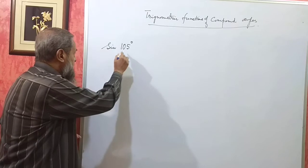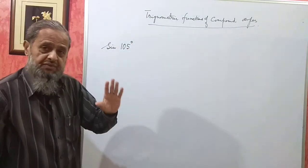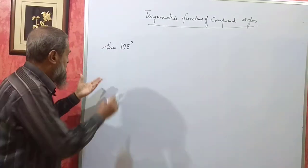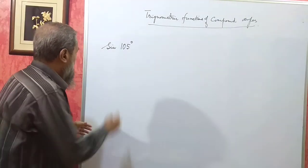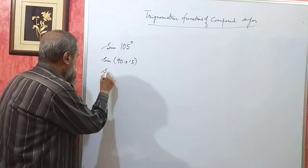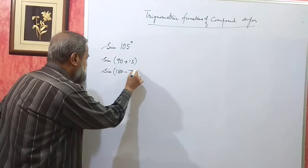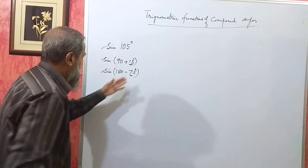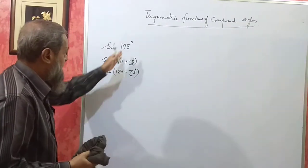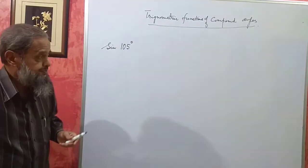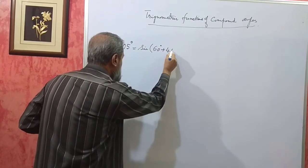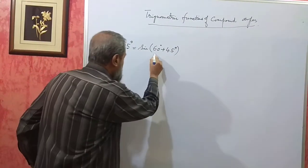Now, this angle is not a well-known angle, and this problem cannot be solved even with the help of allied angles, because if you take allied angles, this is between 90 and 180. It can be written as either sine of 90 plus 15 or sine of 180 minus 75. But this 15 degree and 75 degree are also not well-known angles. So even with the help of allied angles, we cannot solve this. What I can do here is write it as sine of 60 degree plus 45 degree — 60 plus 45 is 105. Now, this is called a compound angle.